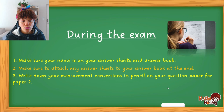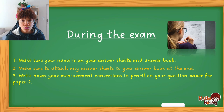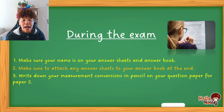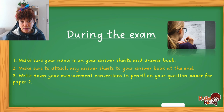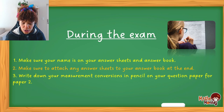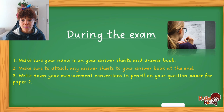Write down your measurement conversions in pencil on your question paper for Paper Two. When you get to the measurement section, I give you clear, easy steps in my conversions video to write down and do conversions between units very easily. I always tell my students: at the start of the measurement section, don't even read the questions — just write that down on your question paper so that whatever questions ask, you can use this tool and get the exact answer. I'll also link that video in the description box below.